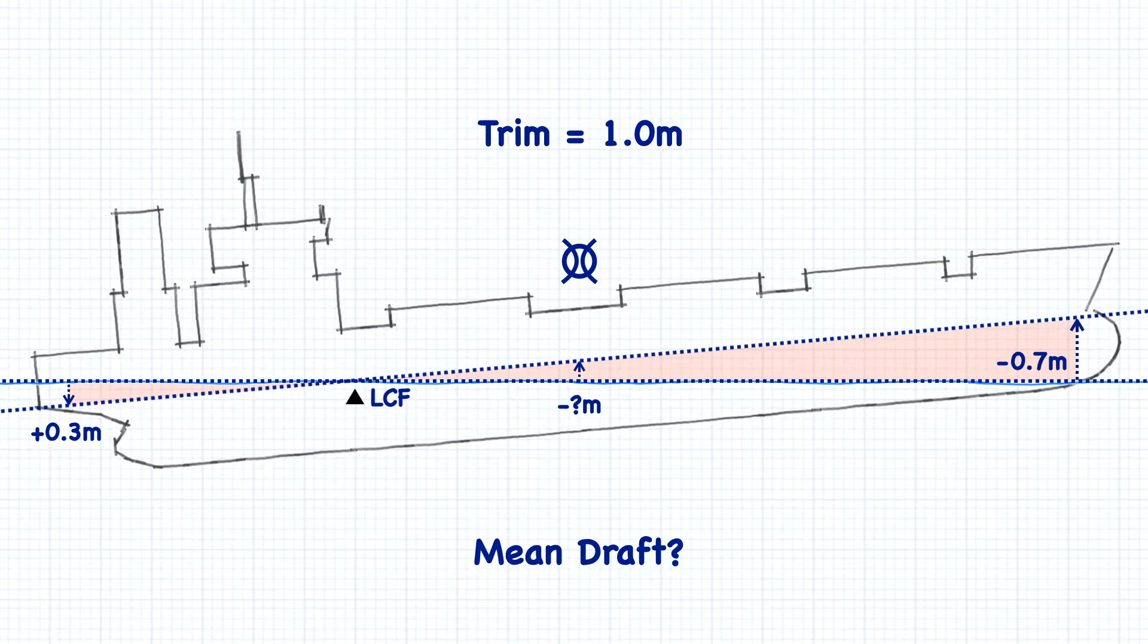Instead, the mean draft is located at the center of flotation, which we call the true mean draft. And it's the true mean draft that we need to use in our stability books.